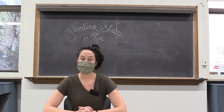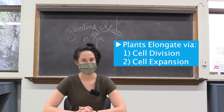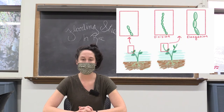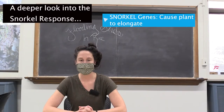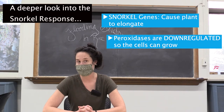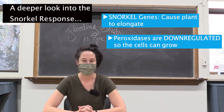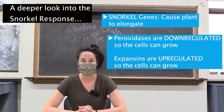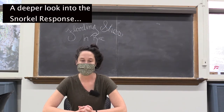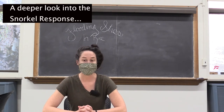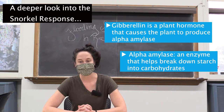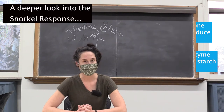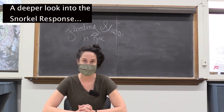There are two ways that the growing plant can elongate: cell division and cell expansion. Since cell division requires more energy, the plant will favor cell expansion whenever possible. The snorkel genes lead to down-regulation of peroxidase, which is involved in holding cell walls tightly together and restricts elongation, and the up-regulation of expansins. These are proteins that loosen cell walls by breaking the bonds between cellulose microfibrils, allowing the cells to expand. Snorkel genes also up-regulate gibberellin, a plant hormone that increases production of alpha amylase, which helps provide the plant with the energy it needs for rapid growth. While the shoots grow fast, root growth is repressed to save energy for the shoots.